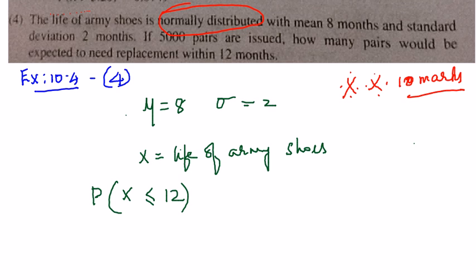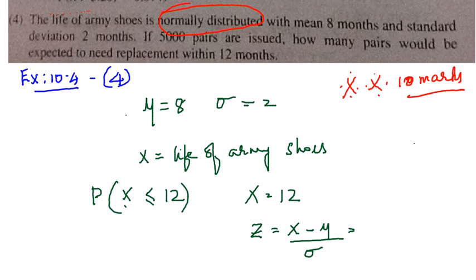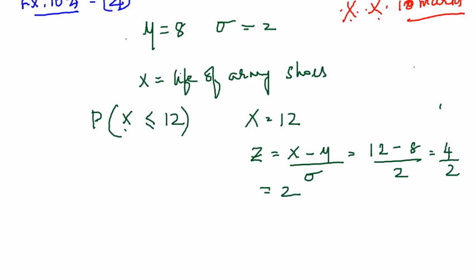x is on the x-scale; now let's convert it to the z-scale. For x equal to 12, the value of z is given by z = (x − μ) / σ. Please keep writing the formula every time you do the sum. So z = (12 − 8) / 2 = 4 / 2 = 2. Therefore, P(x ≤ 12) = P(z ≤ 2).